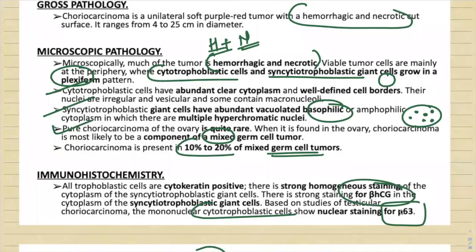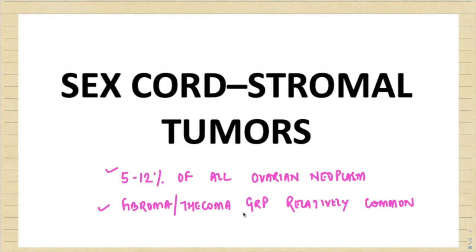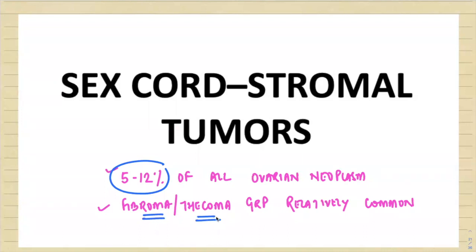The next very important ovarian tumor we will discuss is sex cord stromal tumors. Previously we discussed epithelial tumors and germ cell tumors; now we discuss sex cord stromal tumors of the ovary, which constitute approximately 5 to 12 percent of all ovarian neoplasms. Among all tumors in this group, the fibrothecoma group is relatively more common.